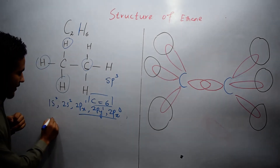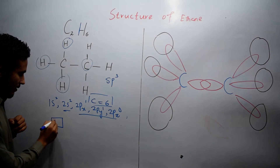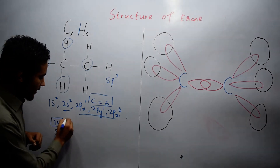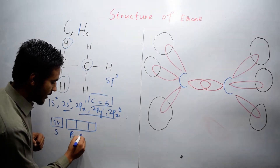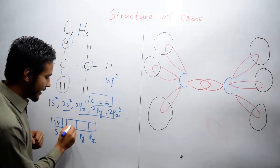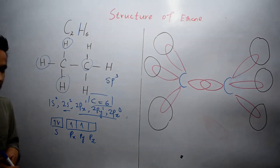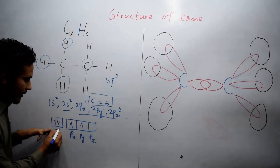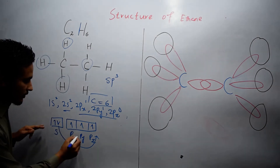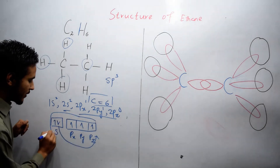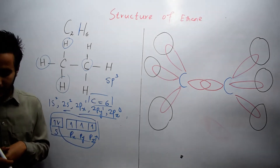In the ground state we have the s orbital with two electrons, and the p orbitals — px has one electron, py has one electron, and pz has zero electrons. What happens is that one s electron moves toward pz. In this way, three p orbitals and one s orbital mix with each other and form a new orbital known as the sp3 hybrid orbital.